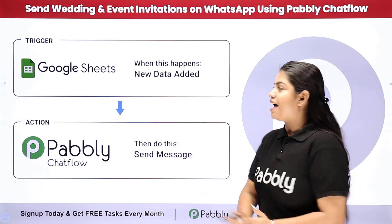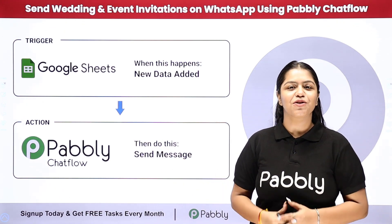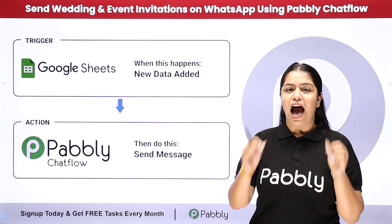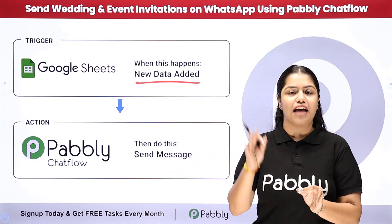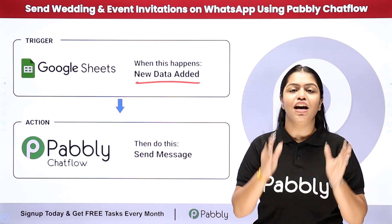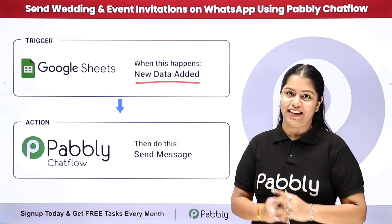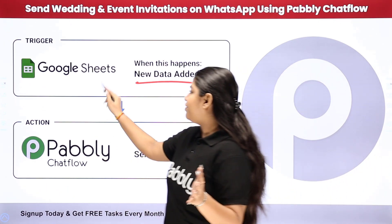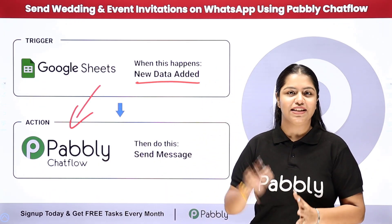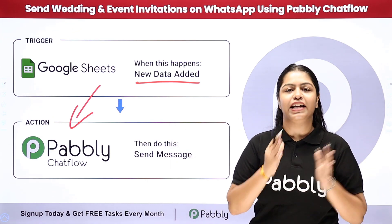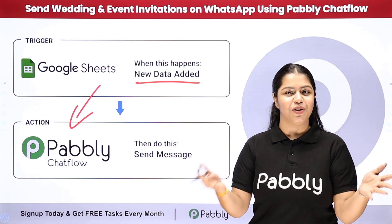To solve this problem, I have created an amazing connection between my Google Sheets and Pabbly Chatflow. Now, whenever I add my details into Google Sheets, wedding invitations and event invitations will automatically be sent to my invitees on WhatsApp — without any programming or coding. We are going to create this connection between Google Sheets and Pabbly Chatflow using Pabbly Connect. So let's come to my screen.